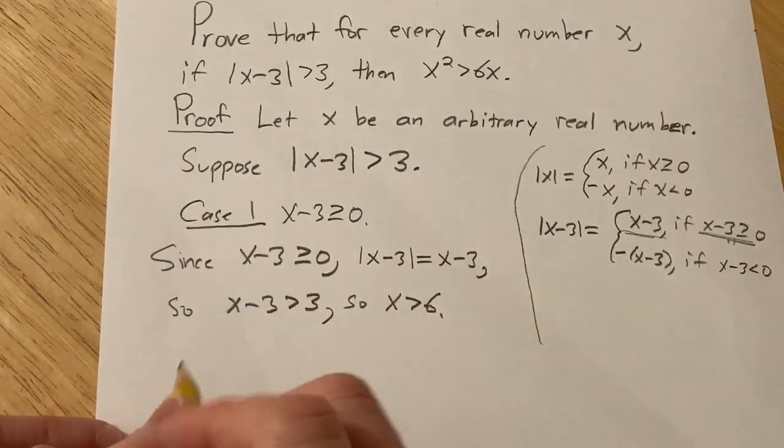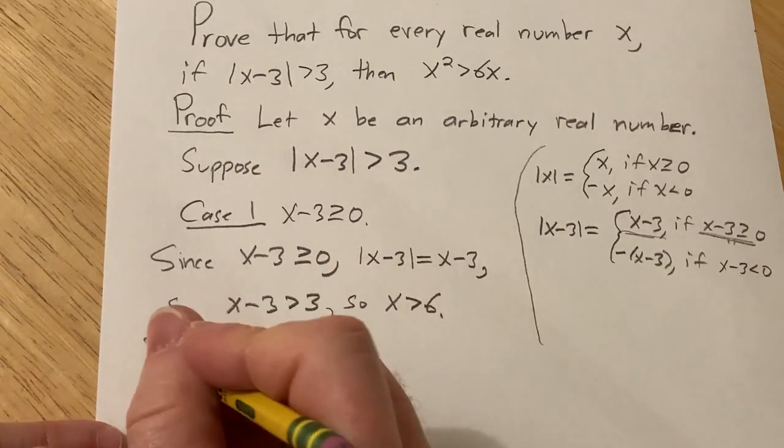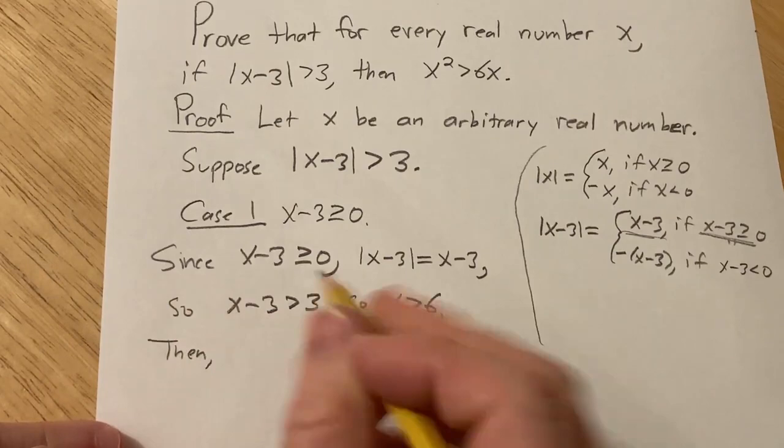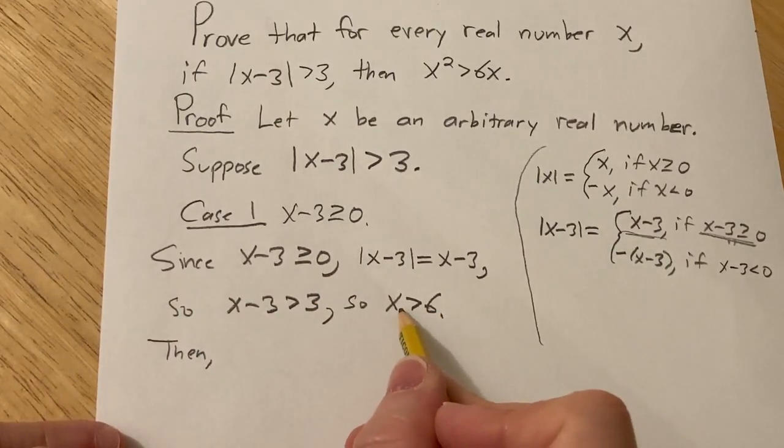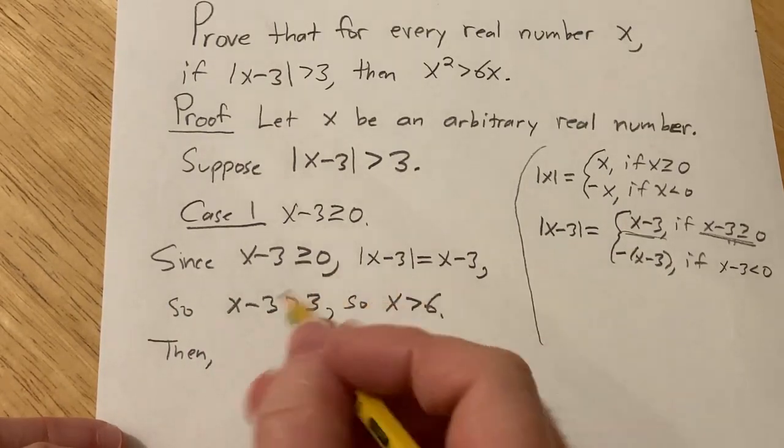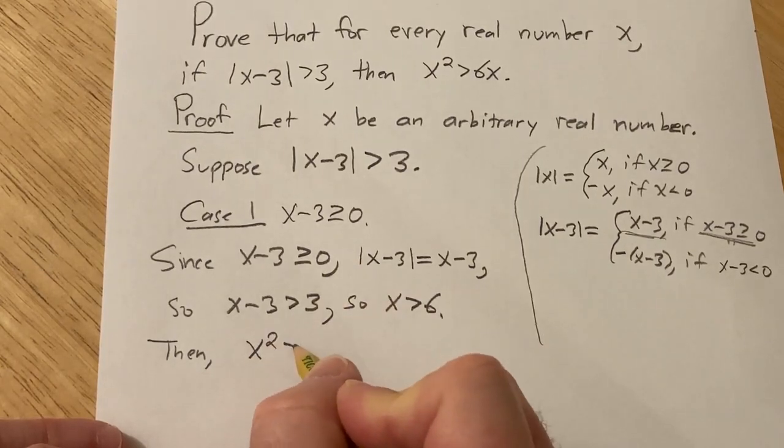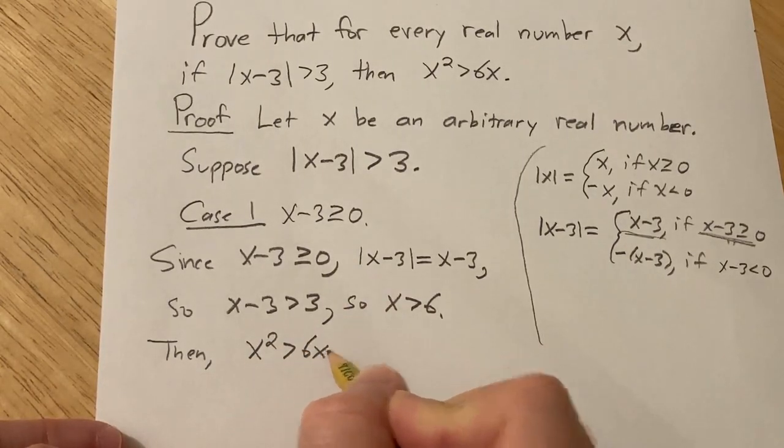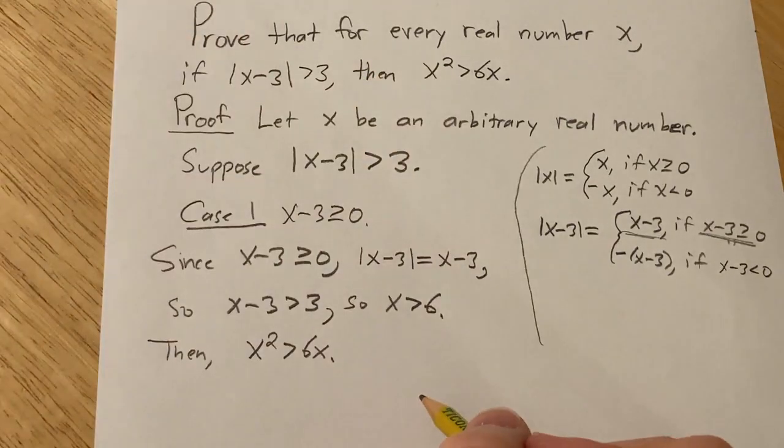So, because we add 3 to both sides. So in particular, it's positive. So then, because it's positive, you can multiply both sides of this equation by x and it's not going to reverse the inequality sign. So then you get x squared greater than 6x, which is exactly what we wanted. So we're done.